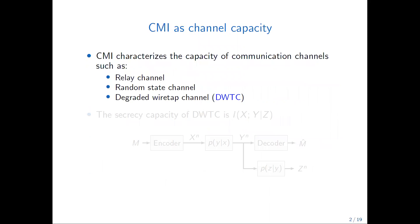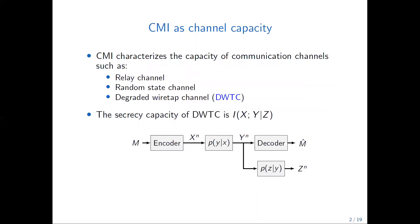CMI can characterize the capacity of communication channels such as relay channel, random state channel, or degraded wiretap channel. The secrecy capacity of the degraded wiretap channel is represented as a conditional mutual information between X, Y, and Z, and the secrecy capacity means the highest rate we can achieve such that we can reliably decode M using Y, while it is impossible using Z.